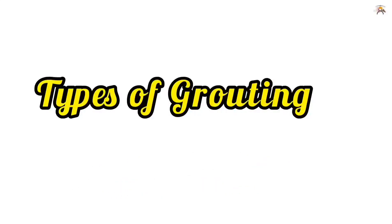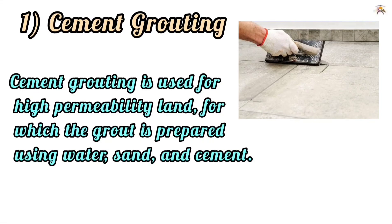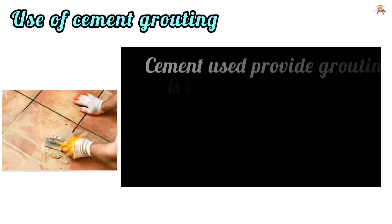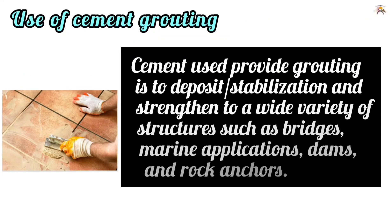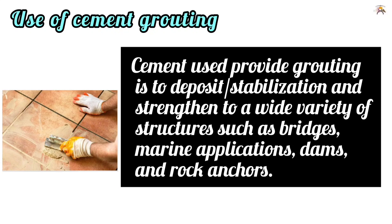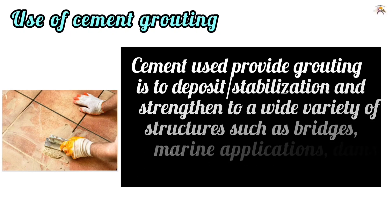Types of grouting. 1. Cement grouting. Cement grouting is used for high permeability land, for which the grout is prepared using water, sand and cement. Cement grouting is used to provide deposit stabilization and strength to a wide variety of structures such as bridges, marine applications, dams and rock anchors.